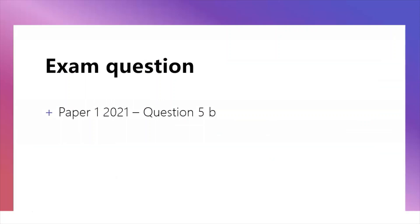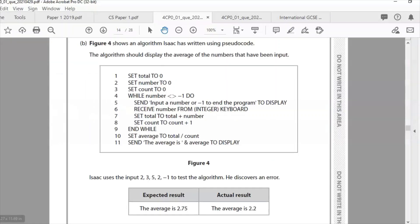The question we're looking at is 2021 question 5b. We've got an algorithm written in pseudocode. The algorithm should display the average of numbers that have been input. You set up variables: total to zero, number to zero, count to zero. Then a while loop — while number is not equal to negative one. The user inputs numbers, it adds to the count, totals the numbers, and divides total by count. Negative one is used to quit.